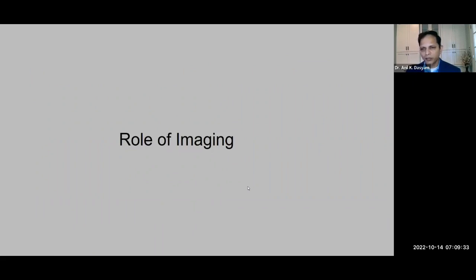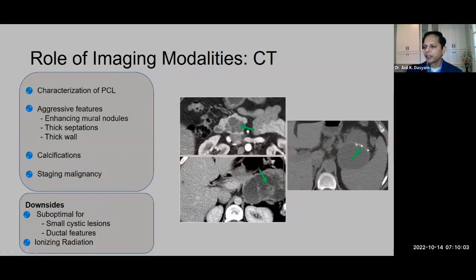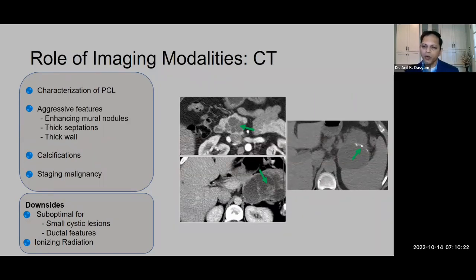Clinical presentation is also useful in arriving at a diagnosis. Pseudocysts are often associated with a history of acute or chronic pancreatitis. Many cystic lesions present with abdominal pain or discomfort, but a significant number are completely asymptomatic and seen incidentally. The most commonly used imaging modality is CT scan, which has a diagnostic accuracy of around 60 to 80 percent. CT is good at characterizing cystic lesions, identifying aggressive features such as thick enhancing septations and mural nodules, detecting calcifications better than any other modality, and staging malignancy including regional vascular involvement. Downsides include limited characterization of small lesions, poor ductal assessment, and ionizing radiation.